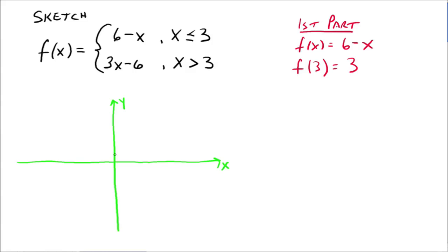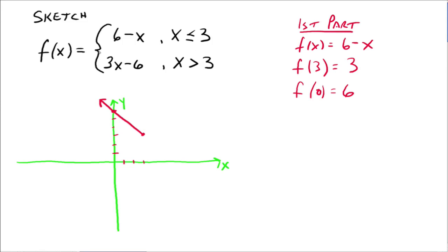So we find what happens for the first part when x is 3: f of 3 is 6 minus 3, which is 3. That's the ordered pair 3, 3. We're putting a solid point because we're allowed to use 3 for this first part. Now, f of 0 would be 6, so we have the ordered pair 0, 6. The graph of 6 minus x is a line, so we connect the dots. When x values are to the left of 3, the graph looks like the line 6 minus x.